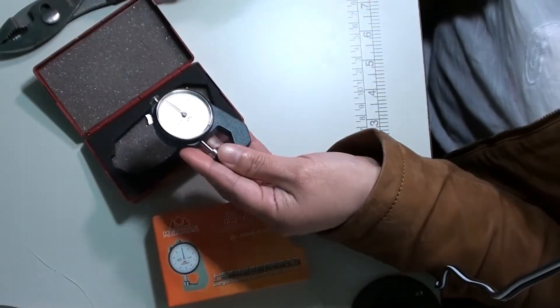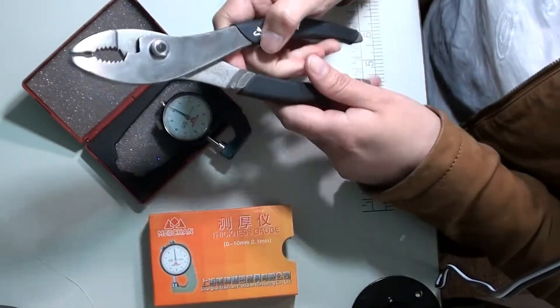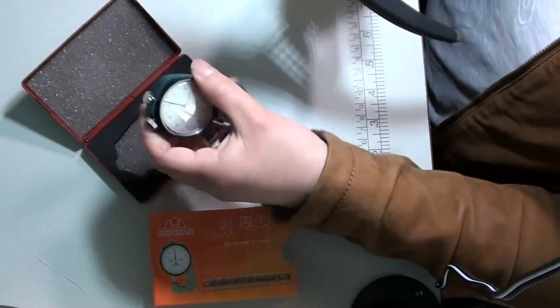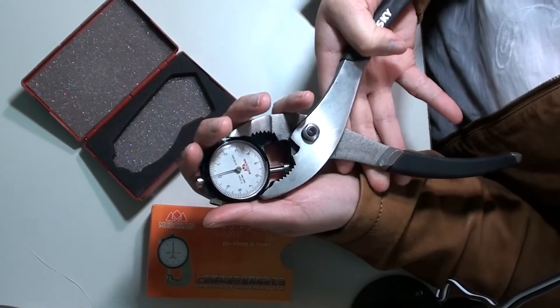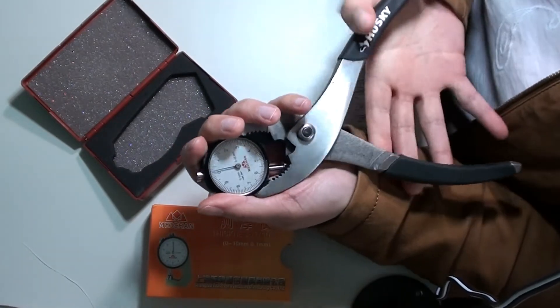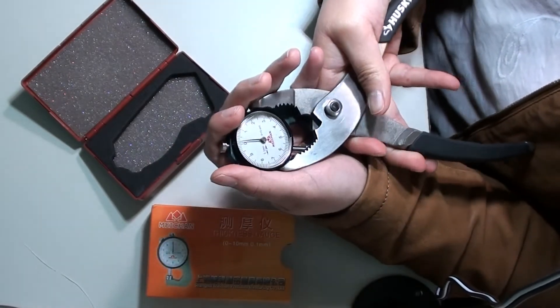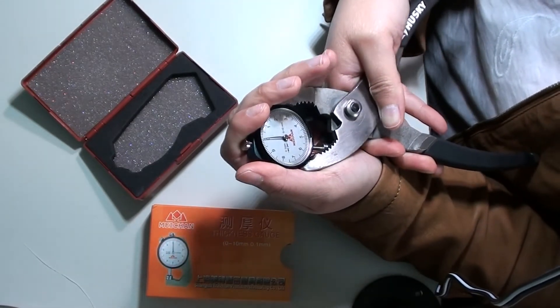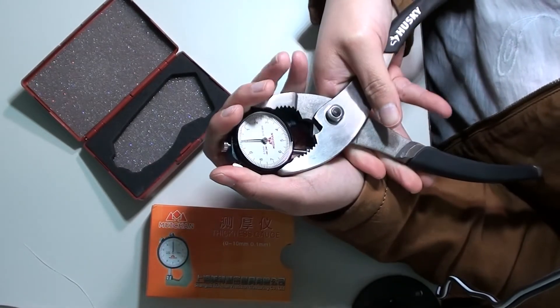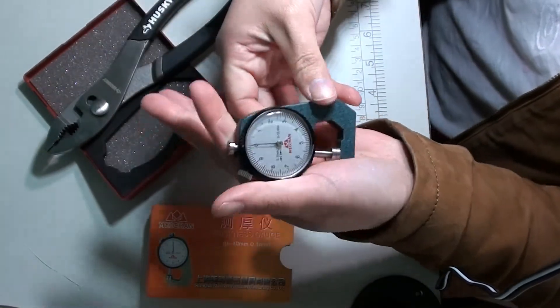So all you need is just a pair of pliers. You just hold it, make sure you don't break it, but put enough pressure to move the dial to zero. Just like that.